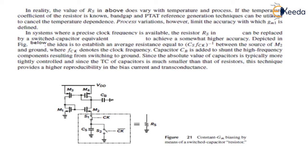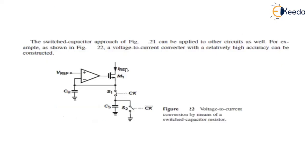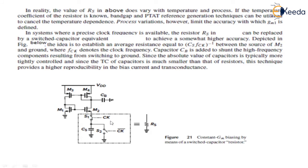Now in systems where a precise clock frequency is available, we can replace this resistor Rs by a switched capacitor equivalent to achieve somewhat higher accuracy. It is depicted in the figure below. The idea is to establish an average resistance equal to 1/(Cf·fck), where fck is the frequency of the clock and Cf is the capacitor.